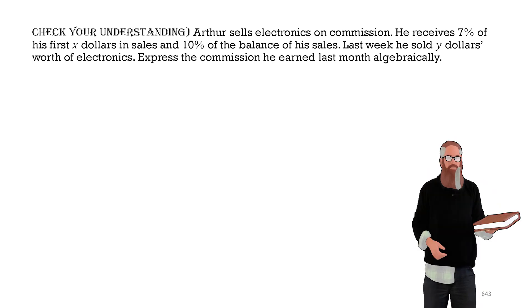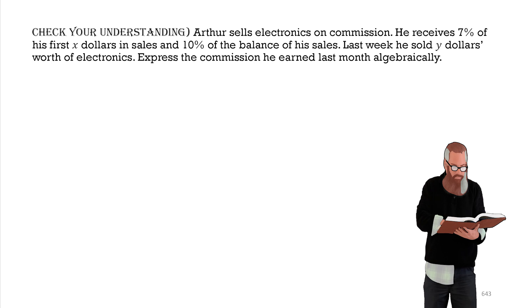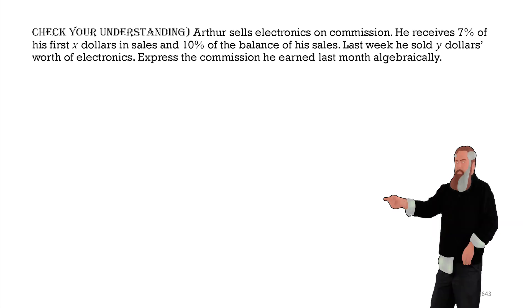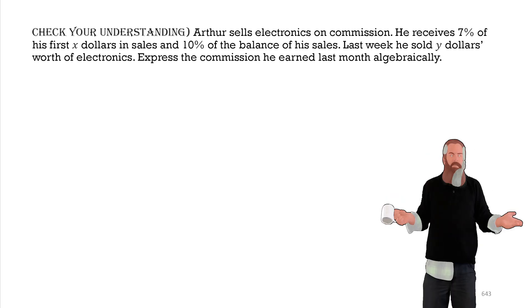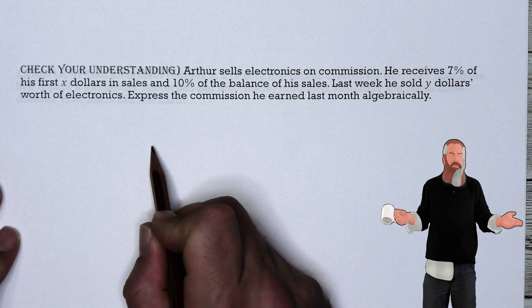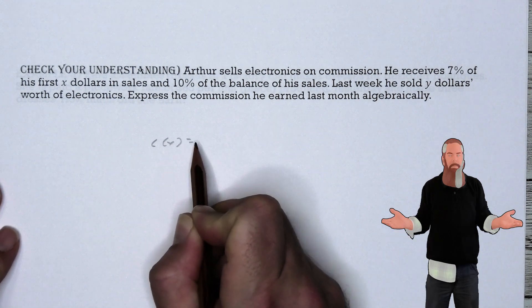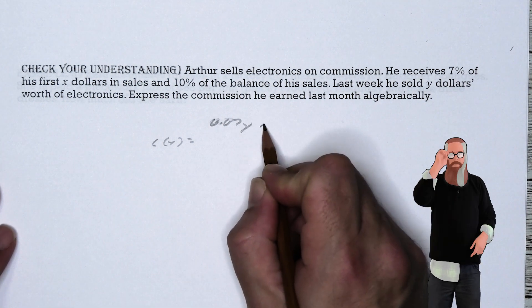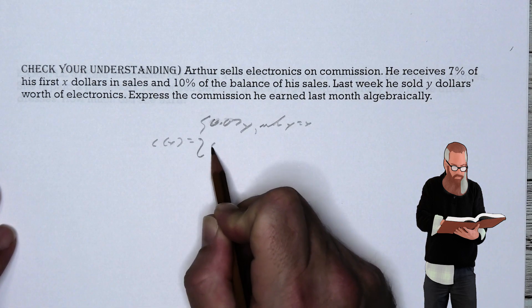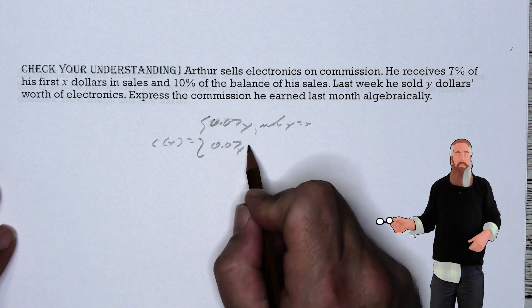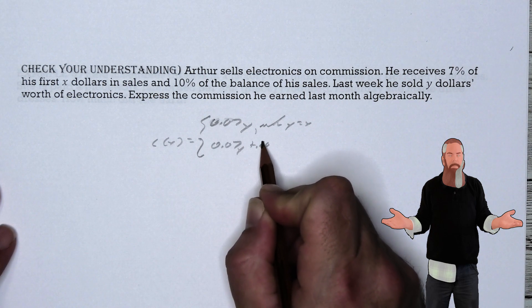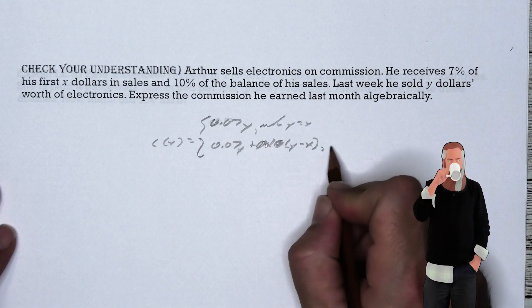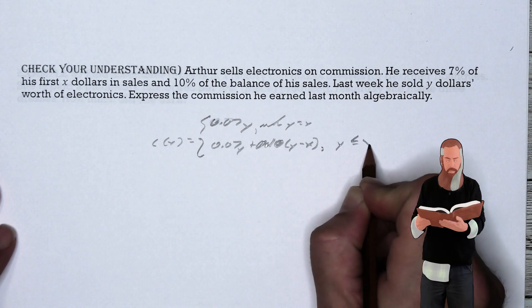Let's check our understanding. Arthur sells electronics on commission — he receives 7% of his first X dollars in sales and 10% of the balance. Last week he sold Y dollars worth of electronics. Express his commission algebraically. When Y ≤ X, he earns 0.07Y. When Y > X, he earns 0.07X plus 0.10(Y − X) for the sales over X dollars.